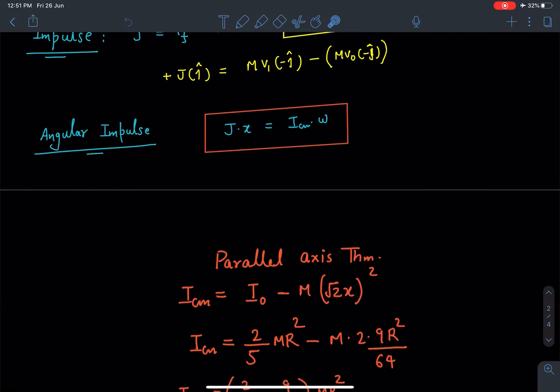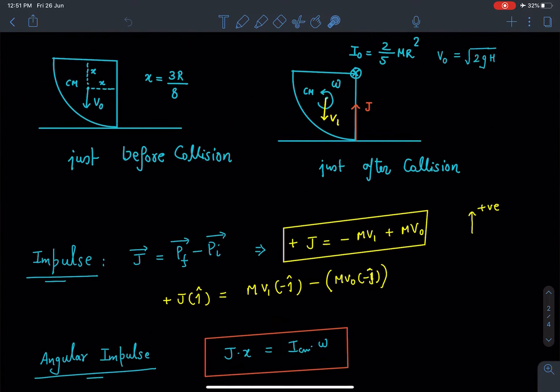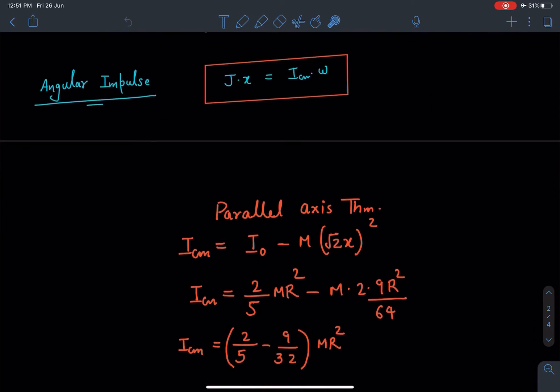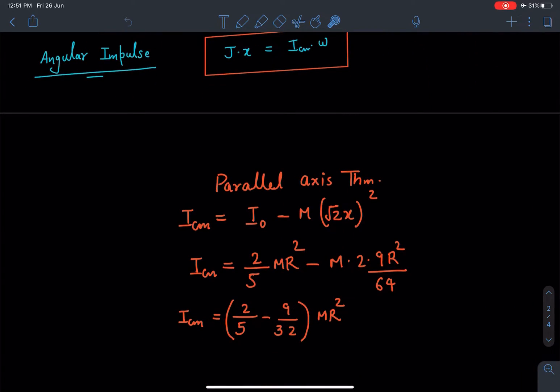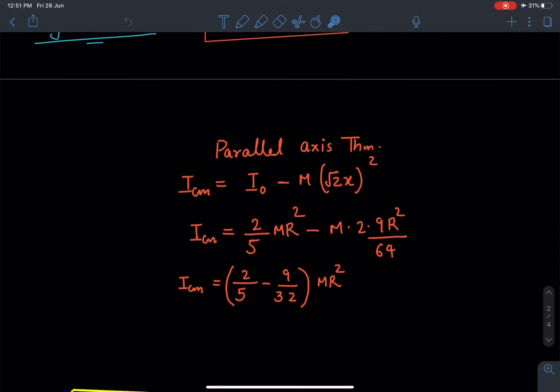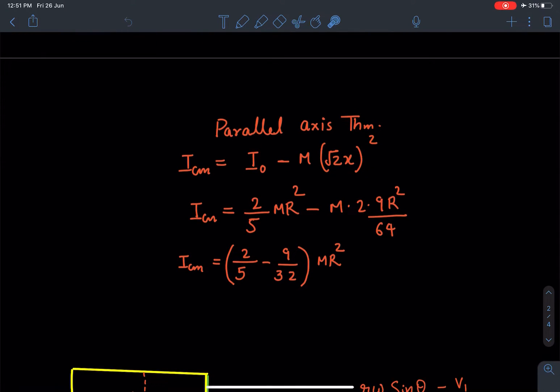Now this Icm calculation can be done by using parallel axis theorem between this axis O and axis passing through center of mass. These two axes are parallel to each other so I can write I₀ = Icm + m×(√2x)². From here I can obtain the value of moment of inertia about an axis passing through center of mass which will be Icm = I₀ - m(√2x)². The x value is known to us that is 3R/8, so on substituting this moment of inertia about center of mass will be known to us.